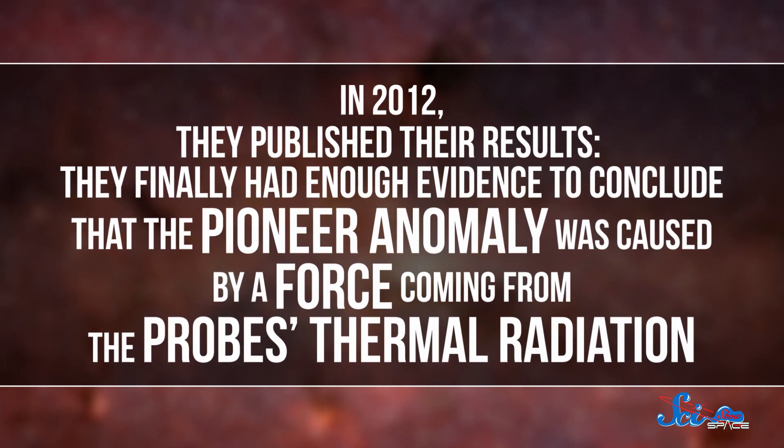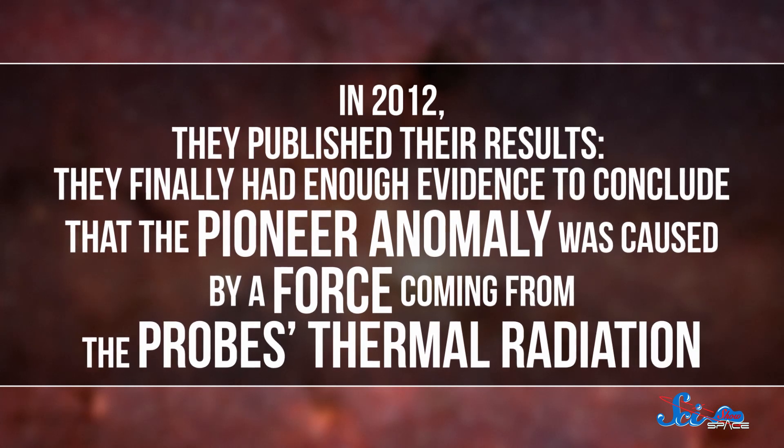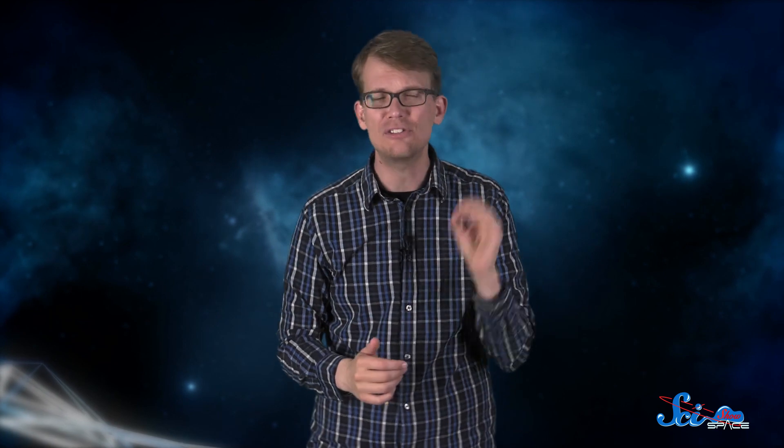They finally had enough evidence to conclude that the Pioneer anomaly was caused by a force coming from the probe's thermal radiation. Over 30 years, this tiny force pushed both probes off course a combined distance of 400,000 kilometers, farther than the Moon is from Earth.